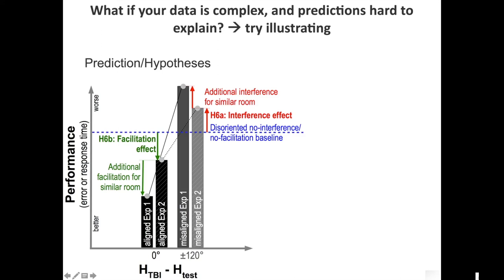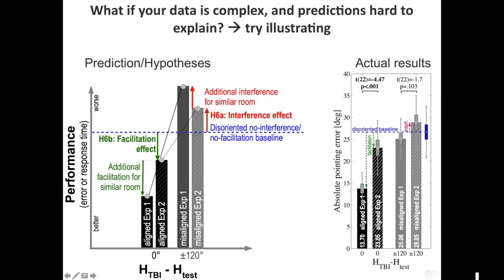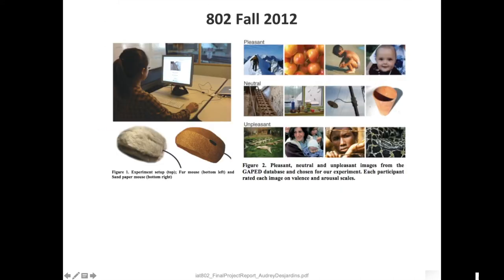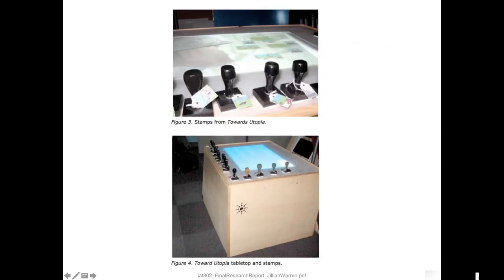Here's a baseline — if it's higher, that means interference; if it's lower, it means a facilitation effect. This is just a demonstration plot, and then the actual plot is similar, so you see: only a little bit of interference but huge facilitation. This way it's easy to understand. If there are different stimuli, it's really good to include them — for example, pleasant stimuli, neutral, and unpleasant stimuli from a specific database — or showing the actual interface.